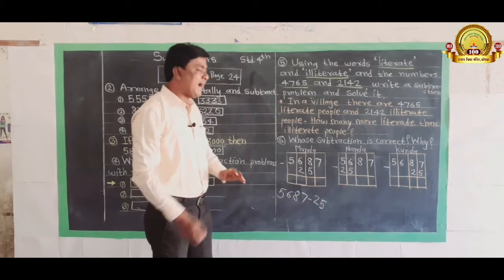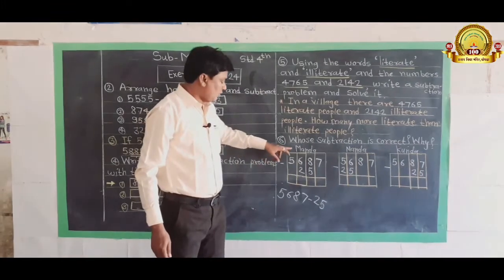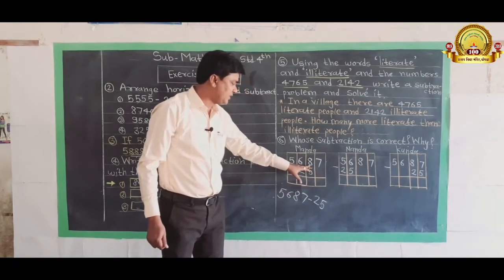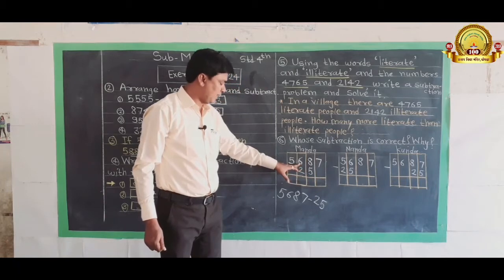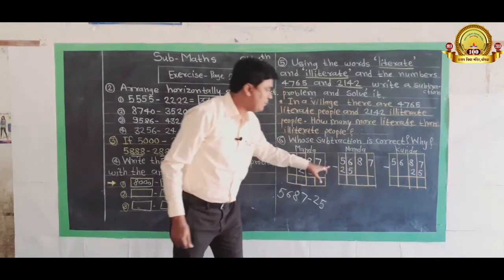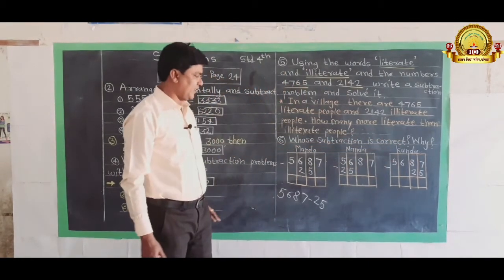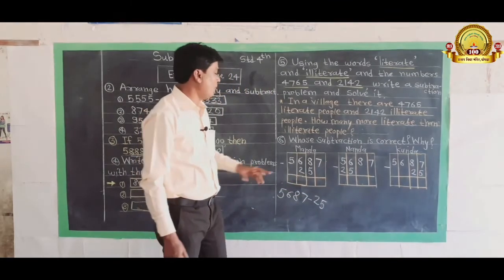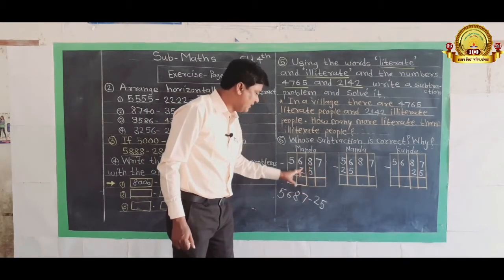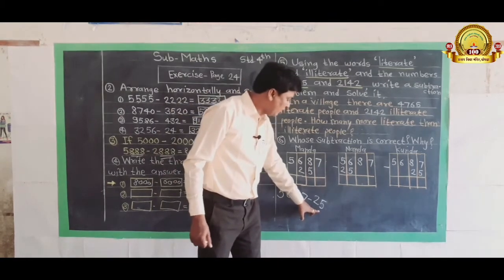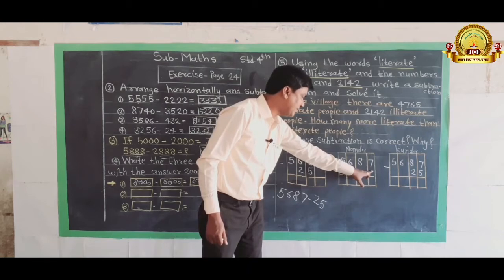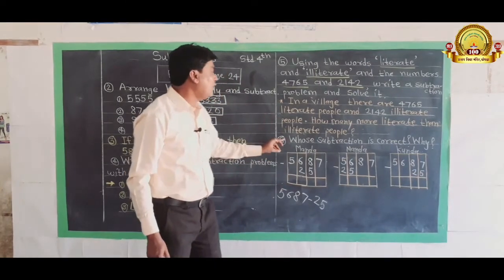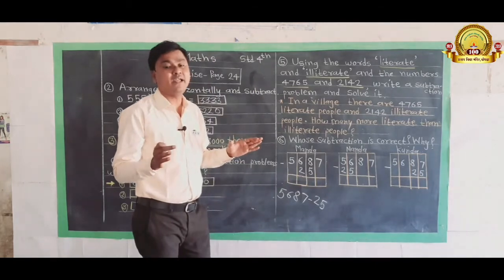5,687 minus 25. Manda wrote like this. 5,687, this is unit place, this is tens place, this is hundred place, and this is thousand place. Nanda arranged the numbers in proper method. Is it correct, is it right?